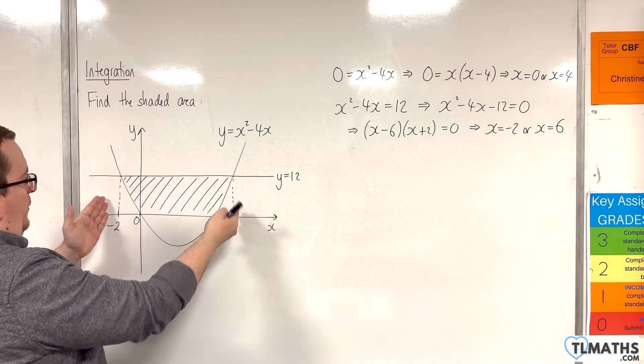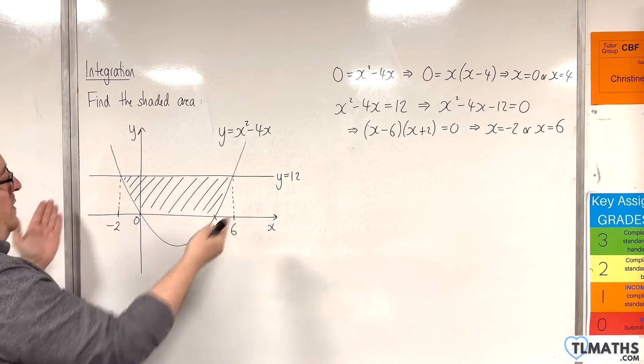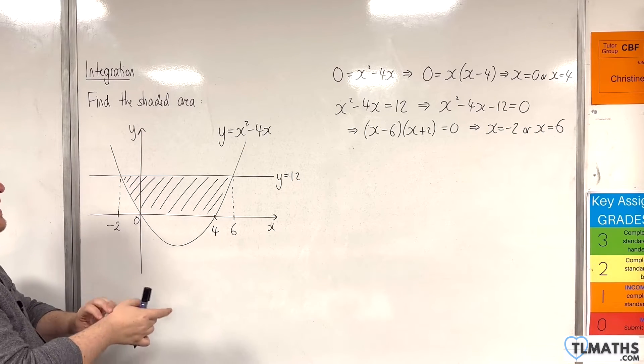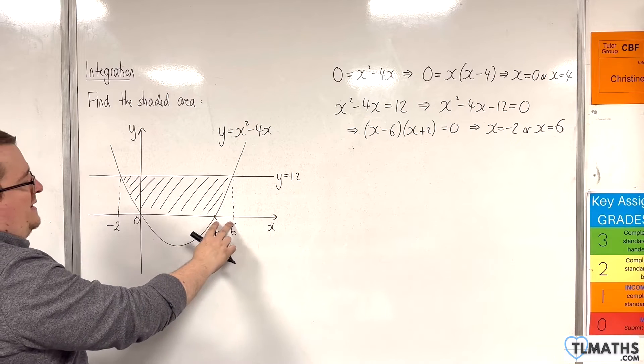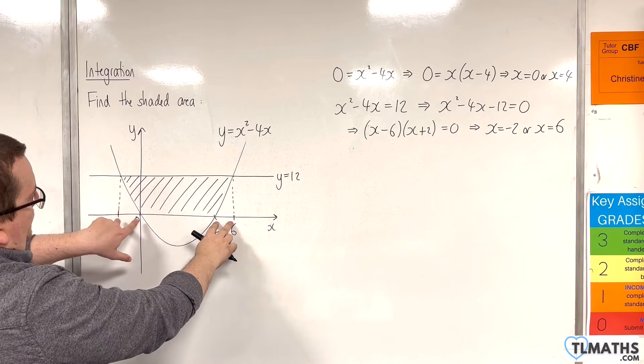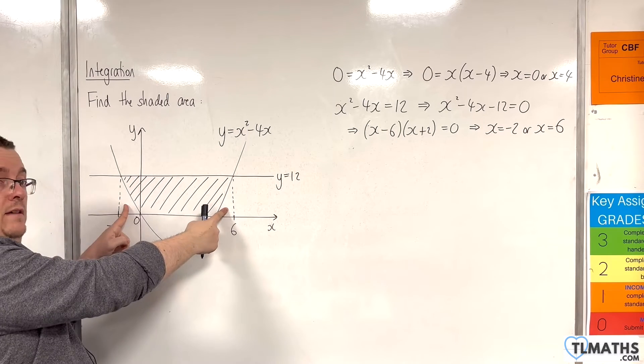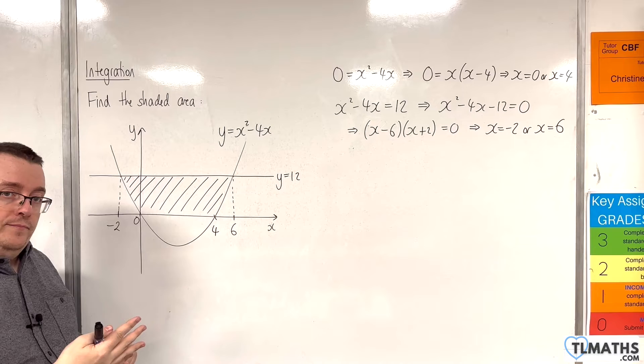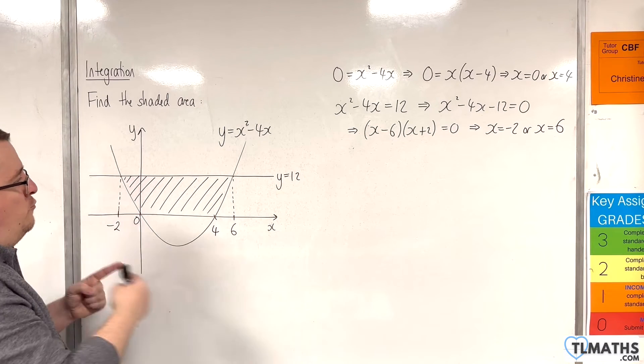And then subtract the area between the curve and the x-axis there and there. Once I've subtracted those two kind of triangular kind of shapes away, I'll be left with the bit that I want. Now, notice that the quadratic curve that we have is symmetrical. And that distance is 2 and that distance is 2. So that means that this area has to be the same as that area there. So I only need to find one of them and then double it. And then subtract that away from the area of the rectangle.